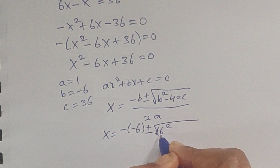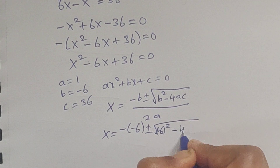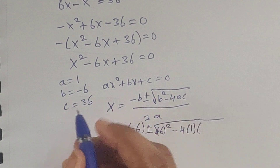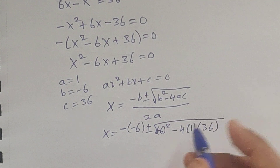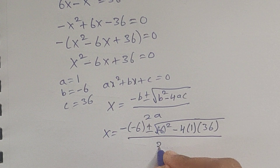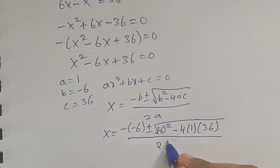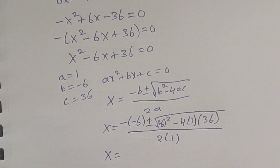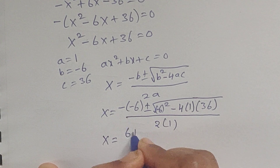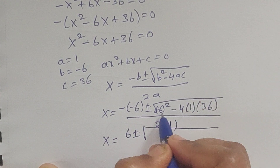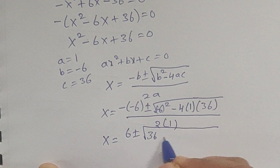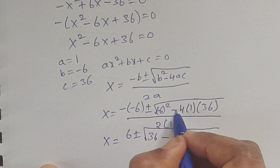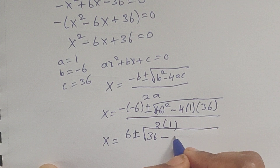So b equals negative 6, so minus b is positive 6. Plus or minus square root of: b squared is 6 squared, minus 4 times a (which is 1) times c (which is 36), all divided by 2 times a (which is 1). So 4 times 36 equals 144.